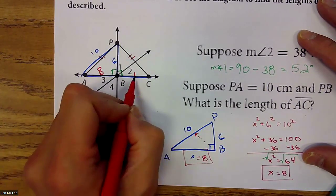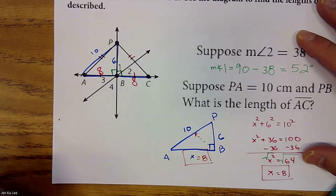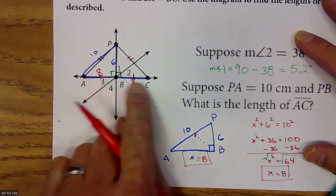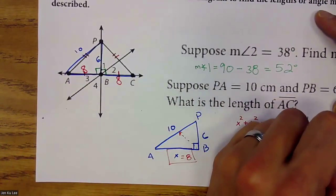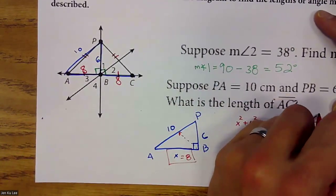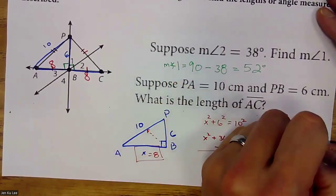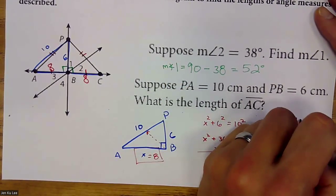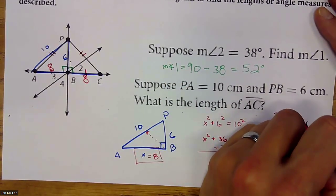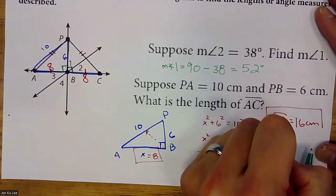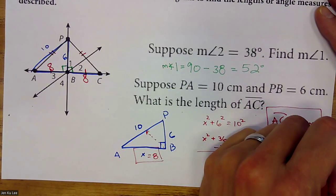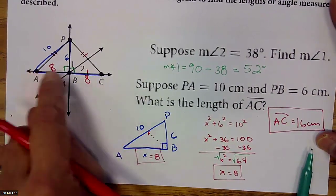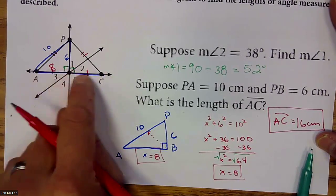AB is 8, and BC is also 8 because they're equal to each other. So what is AC? It's 16, because AC is the whole thing — 8 plus 8.